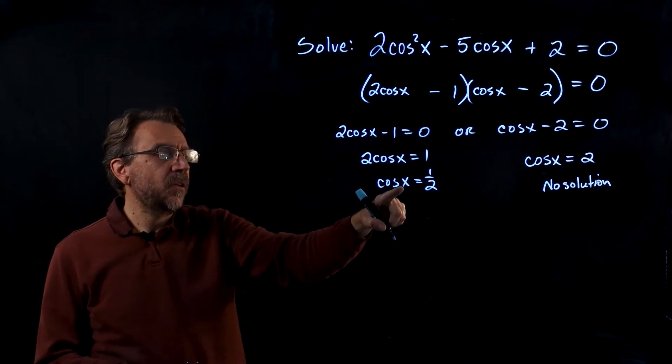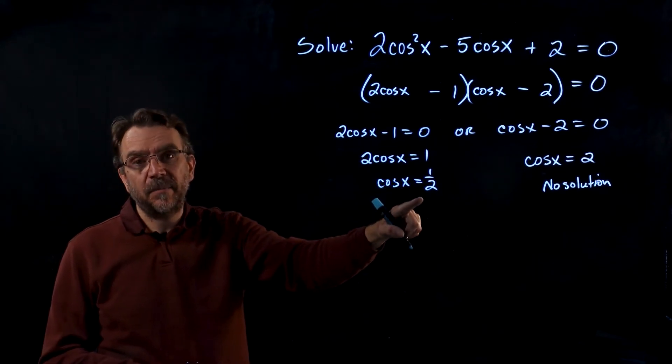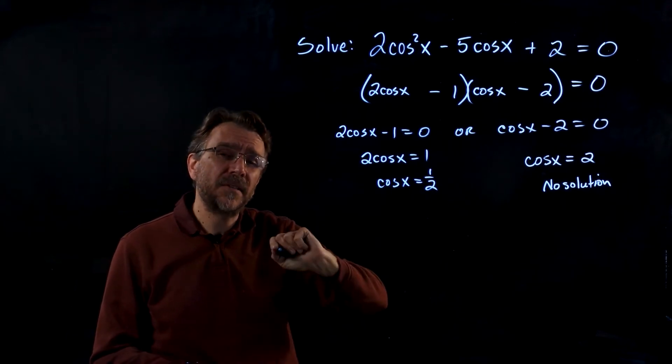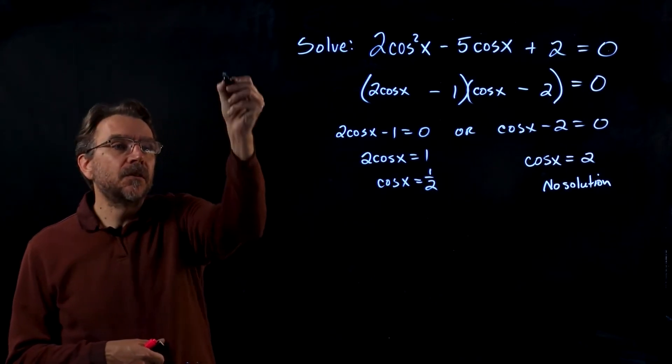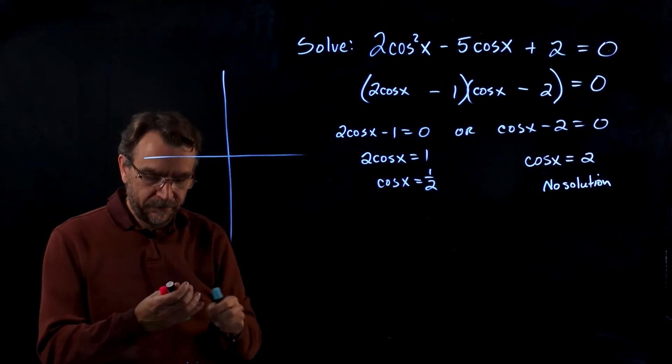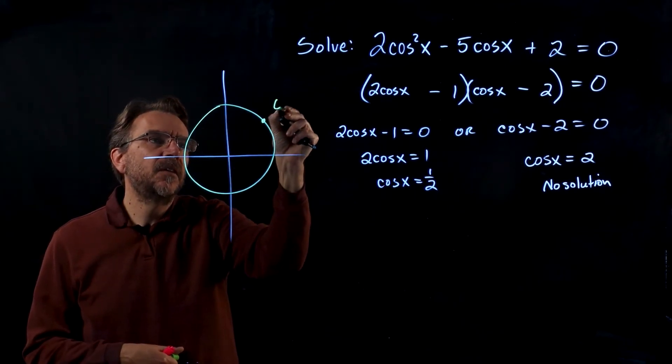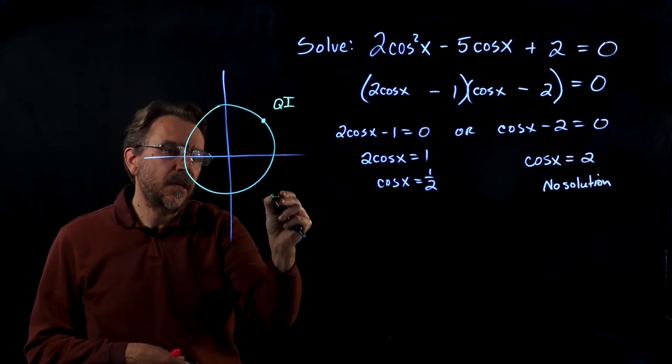Now looking at this, cosine x equals 1 half, that has infinitely many solutions. So we need to think about, where is cosine positive? Let's look at the unit circle. On the unit circle, cosine is positive in q1 and q4.